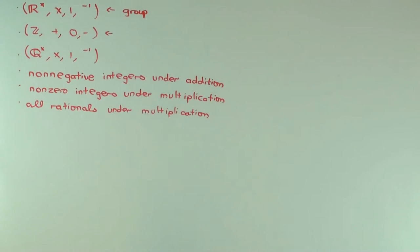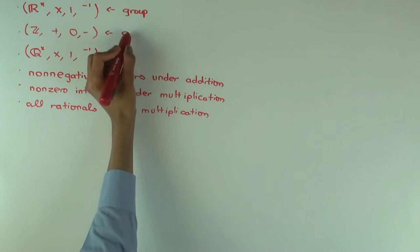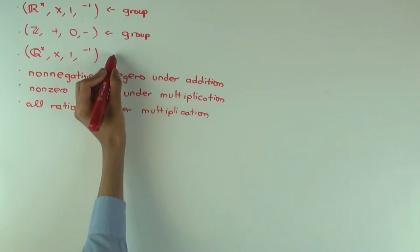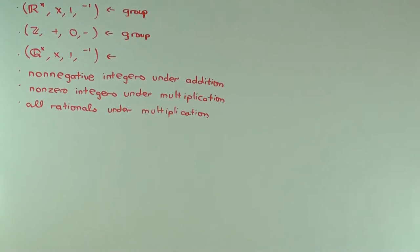What about the integers under addition with identity element 0 and the inverse operation is just negative? Is that a group? Yes. What about the rational numbers, non-zero rational numbers under multiplication with 1 as the identity and the usual multiplicative inverse? Is that a group? Yes.